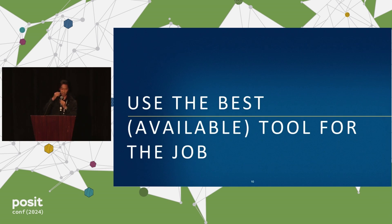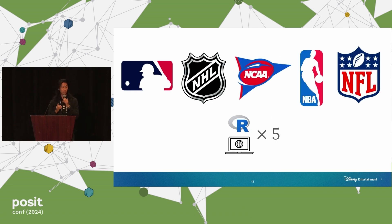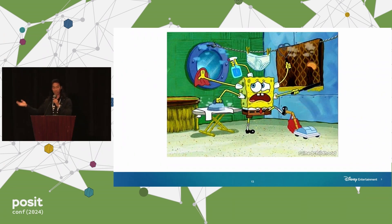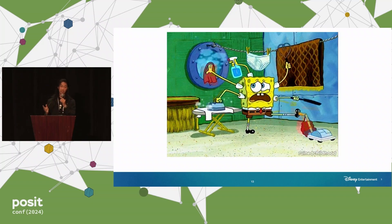The next lesson is to use the best available tool for the job. The ads we started with were, say, watching MLB and running this on a script on your own laptop. ESPN was also interested in how these ads would work on the other sports leagues they have access to. In my mind, now we have an R script running five times on one laptop. We had this new model to implement and refactor, but also needed to scale up our processes to handle all these different sports leagues.